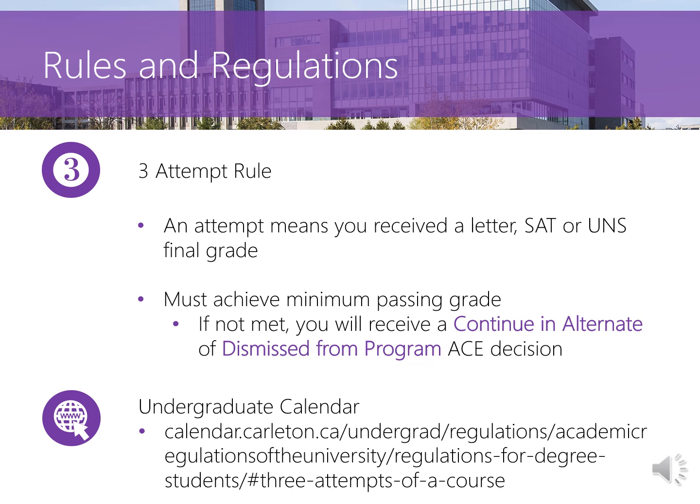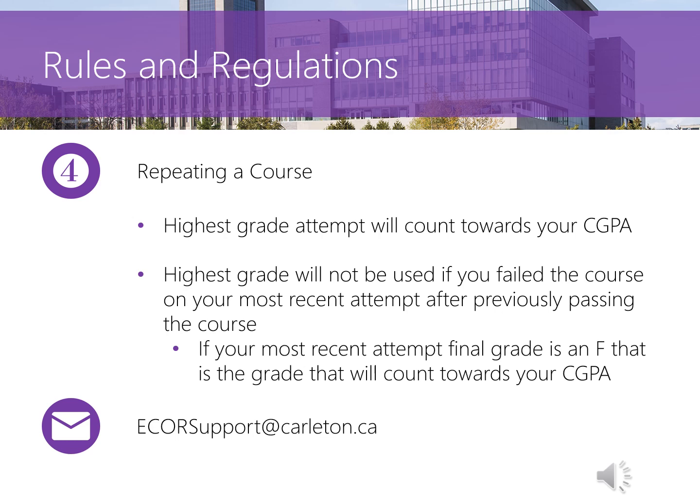In engineering, a student may attempt a course no more than three times. An attempt constitutes receiving a letter grade, SAT grade, or UNSAT final grade. If after three attempts a student has not achieved the minimum passing grade, they will receive a continue and alternate or dismissed from program ACE decision. If you need to repeat or retake a course, please reach out to the first-year support team at ecorsupport.carleton.ca. In most cases, your degree audit will count the highest attempted grade for a course. However, if your most recent attempt of a course you've previously passed results in a failed or F grade, that most recent attempt is counted.